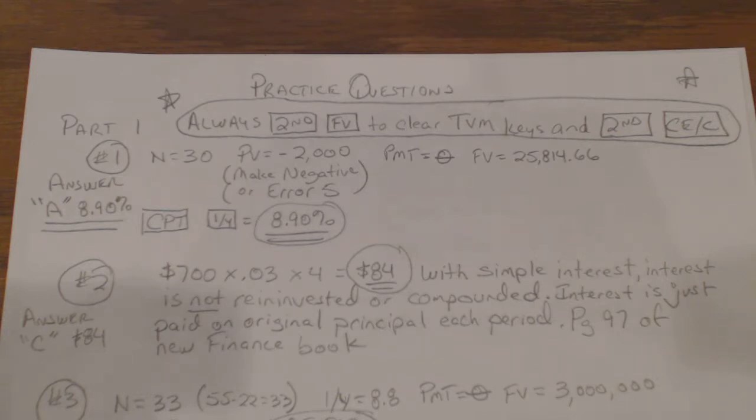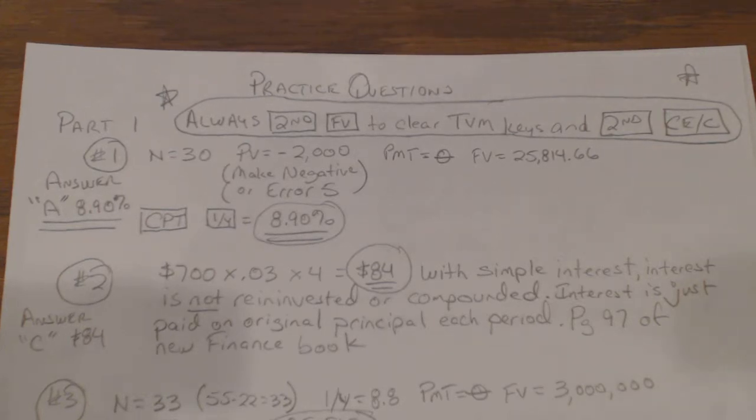Remember, it's not compounded, it's not reinvested. It's not you get $21 the first year and then you get 3% interest on that $21 on top of your $700. Simple interest is based on the original principal multiplied times the interest rate times the number of years.